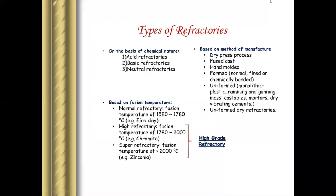Classification is based on: one — chemical nature; two — method of manufacture; three — fusion temperature. Fusion temperature means the combined temperature at which the material fuses. These are the three bases of classification. We will see them one by one now.